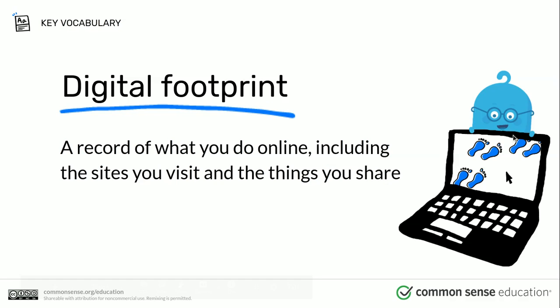So now — a digital footprint. What is okay to share online? Your personal information is okay to share: your opinions on things, things that you like, those sorts of things. Things that you should not share online are your private information, like your full name, your address, your phone number, your age, your birthday, where you go to school. A digital footprint is a record of what you do online, including the sites that you visit and the things that you share. As long as the information you share is not private information, you are okay.